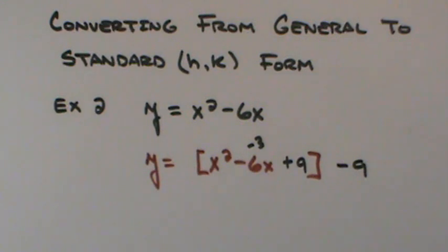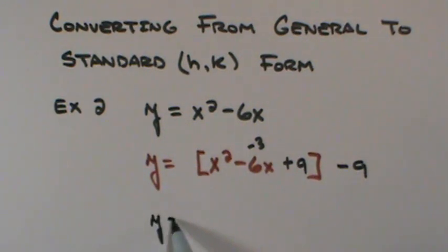And then I condense this. As I condense it, I get y equals, there's the implied 1 there. So I can call this x minus 3 quantity squared minus 9.